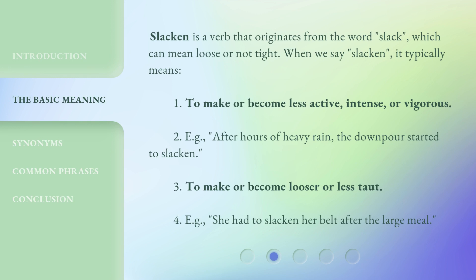Slacken is a verb that originates from the word slack, which can mean loose or not tight. When we say slacken, it typically means: 1. To make or become less active, intense, or vigorous. For example, after hours of heavy rain, the downpour started to slacken. 2. To make or become looser or less taut. For example, she had to slacken her belt after the large meal.